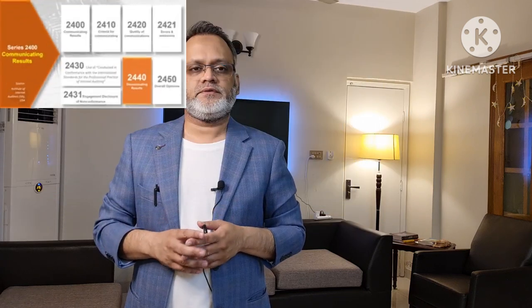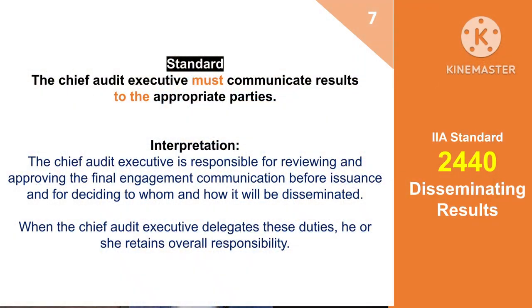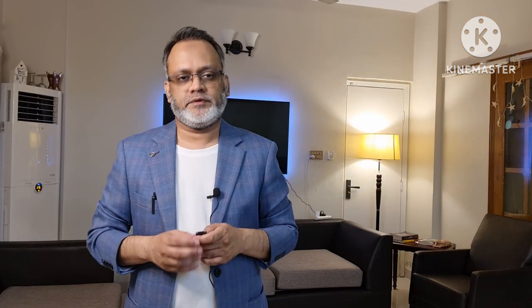The second-to-last standard of series 2400 is 2440, which is regarding disseminating results. The basic requirement of this standard is that the Chief Audit Executive must communicate results to the appropriate parties. As per interpretation, the Chief Audit Executive is responsible for reviewing and approving the final engagement communication before issuance and for deciding to whom and how it will be disseminated. When the Chief Audit Executive delegates these duties, he or she retains overall responsibility.